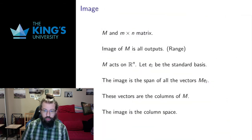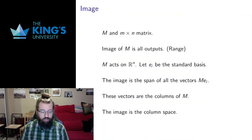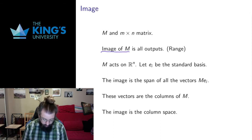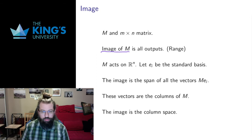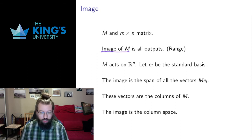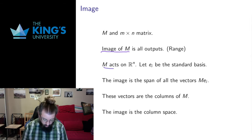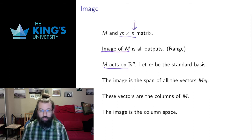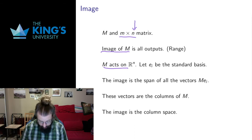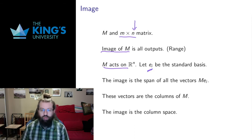Let's go back to image. We defined image in the previous video. Here I'm just talking about the image of m itself — the image of m is all possible outputs. In other courses we call this the range of the function. So mx acts on Rn; it's an m by n matrix, so the number of columns is the dimension of the domain. Let's think about the standard basis of Rn, where e1 is the unit vector in the first axis direction, e2 in the second, and so forth.